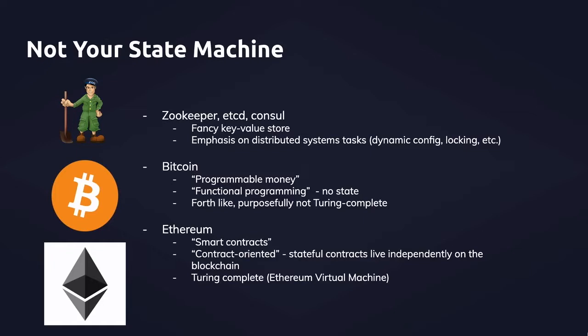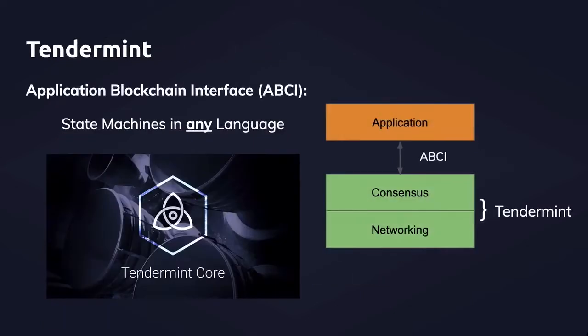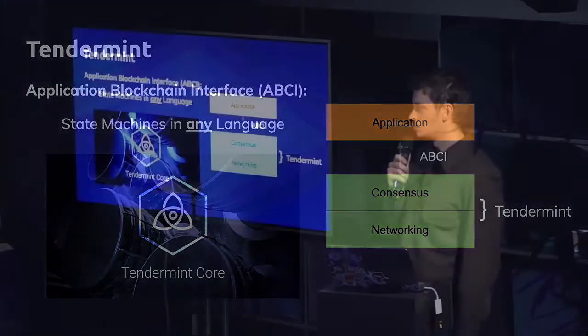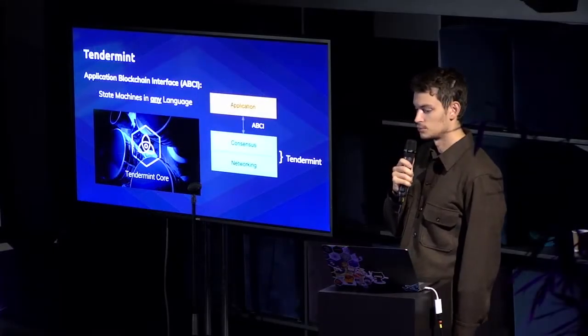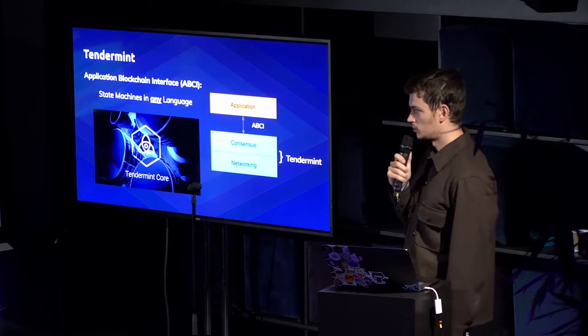All these three things have in common is that they're not your state machine. You're limited to their rules, and to build outside of it, you either have to fork the code base or hope that someone else has done it already. In Tendermint, we decided to do it a bit differently — to separate the application from the consensus and networking through this interface called ABCI. This allows state machines to be built in any language, but also state machines to not have to adhere to the rules of state machines that are not your own.